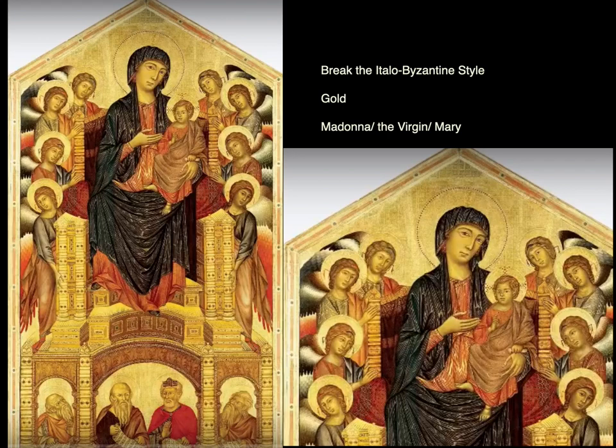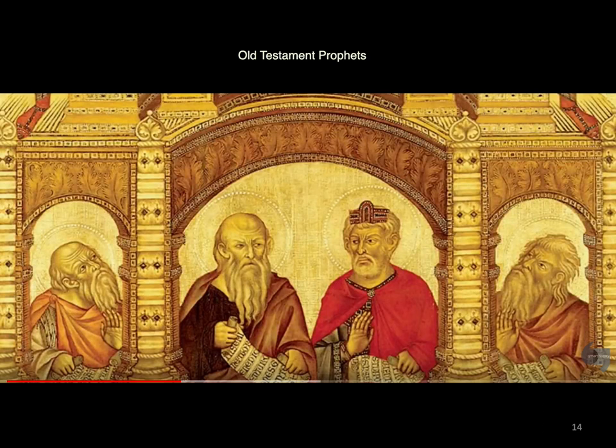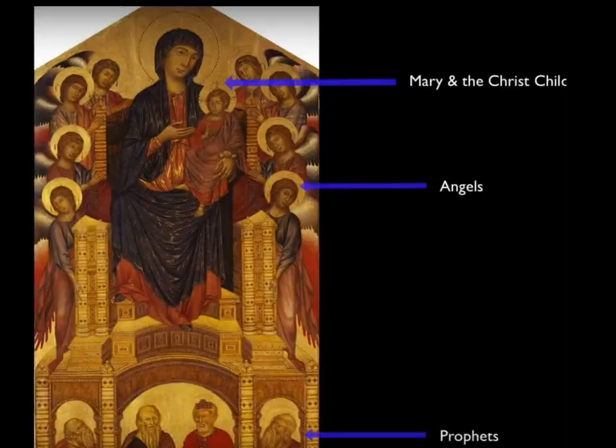This can be described as the cult of the Madonna or the Virgin. People would pray to the Virgin Mary and maybe she would speak to God on their behalf. These are Old Testament prophets holding scrolls — they predict the coming of Christ. At the top we see Mary and the Christ child; in the middle are the angels; at the bottom are the prophets.